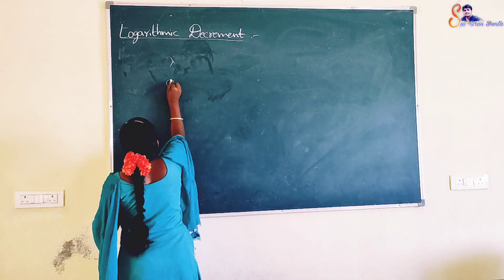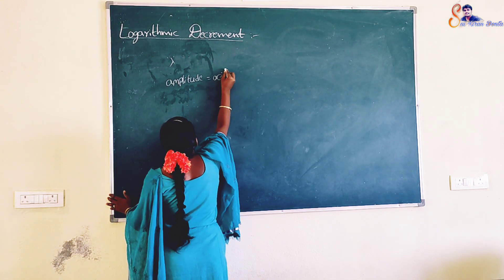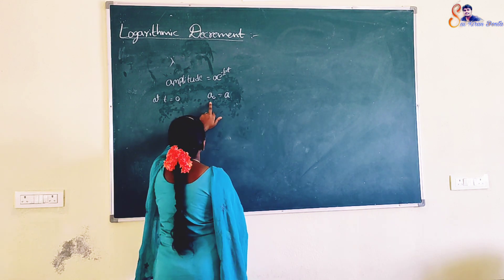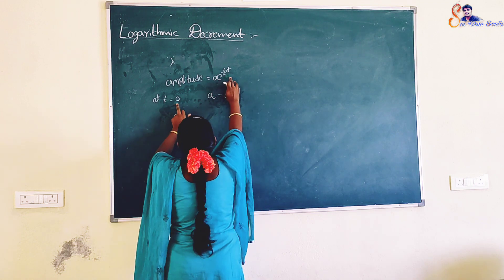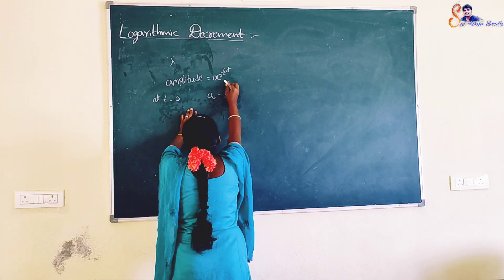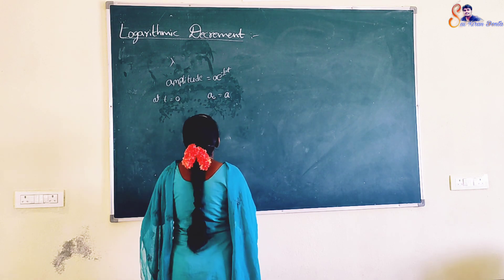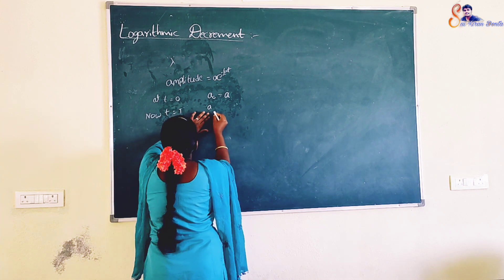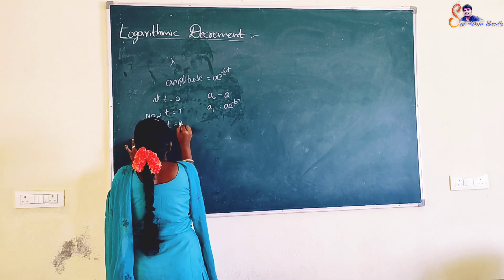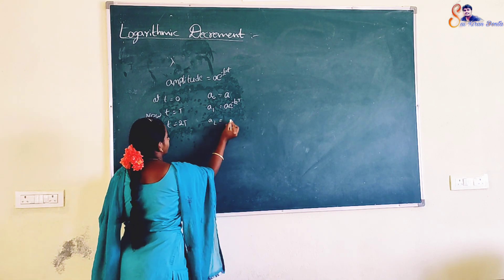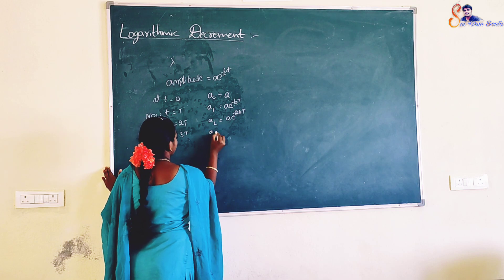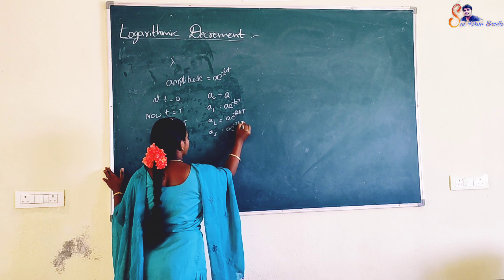The amplitude of a damped harmonic oscillator is given by: amplitude equal to a·e^(−bt). At t = 0, amplitude equals a₀ = a. At t = T, amplitude a₁ = a·e^(−bT). At t = 2T, a₂ = a·e^(−2bT). At t = 3T, a₃ = a·e^(−3bT), and so on.